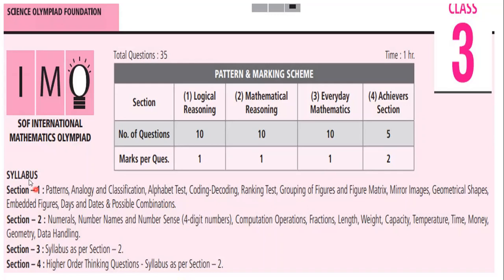Let's discuss the syllabus. Section 1 topics include: patterns, analogy, classification, alphabet test, coding, decoding, plan form test, copying of pictures, hidden methods, embedded images, geometrical shapes, embedded pictures, days and dates, and possible combinations.